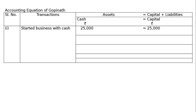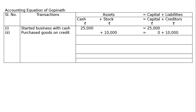Second transaction — purchased goods from Sham on credit. When the name of the person from whom you are buying goods is given, it is a credit purchase. Stock will increase by rupees 10,000 and creditors will increase by rupees 10,000. New cumulative equation: cash rupees 25,000 plus stock rupees 10,000 equals capital rupees 25,000 plus creditors rupees 10,000.